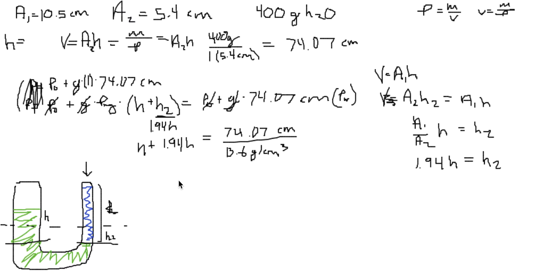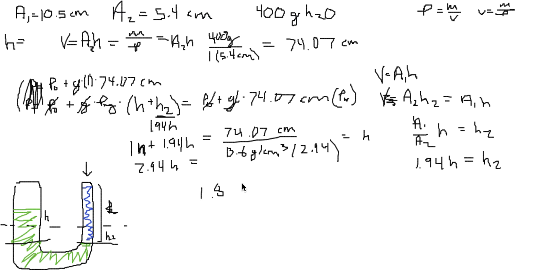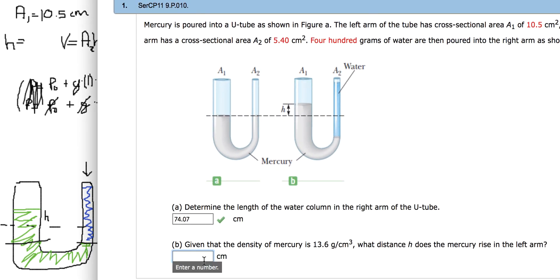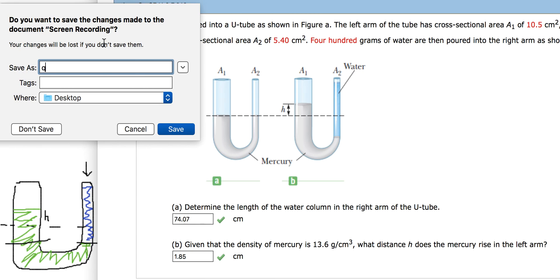Adding the H terms, we get 2.94H equals 74.07 divided by 13.6. Dividing both sides by 2.94, we calculate H equals 74.07 divided by 13.6 divided by 2.94, which gives a value of approximately 1.85 centimeters for the height that mercury rises in the left arm.